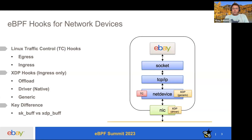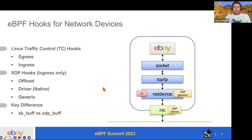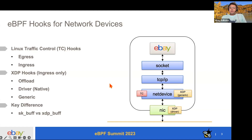This is your typical network stack. At the top you have the application, followed by a socket layer. As it sends frames, it traverses the socket layer, followed by the TCP/IP layer, the net device, and finally the hardware NIC. For eBPF programs we can attach at the net device layer, we broadly have two categories: the Linux traffic control hooks, and the XDP hooks. Traffic control hooks are available on both ingress and egress, whereas XDP hooks are currently available only on ingress.